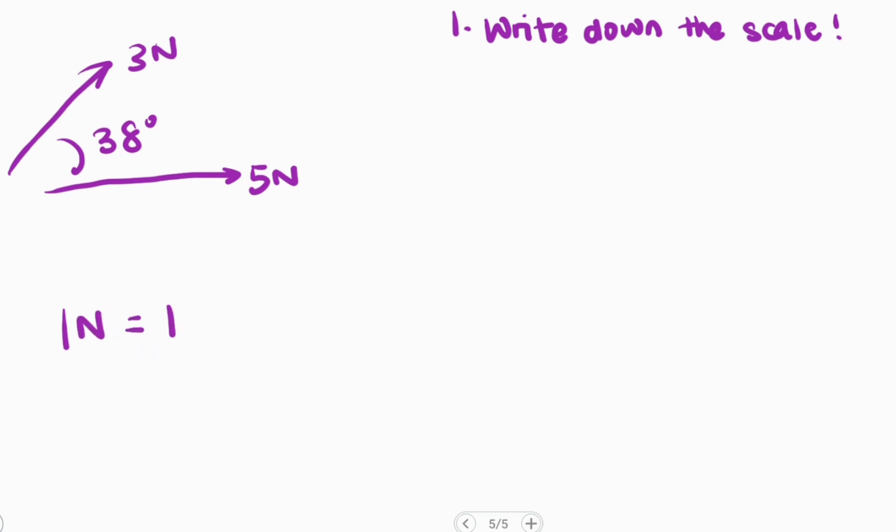So let's get started. Let's say we have a five newton force as we had in our question and a three newton force and they're acting at an angle of 38 degrees to each other. Now, the first step you need to take is to write down the scale. So the scale that we want to use over here is that one newton is one centimeter on paper. So here I'm going to put my scale and I'm going to write this down, which you should do in any exam in which you're asked to use the parallelogram law.